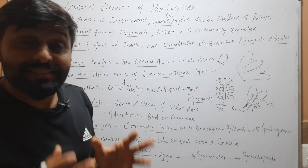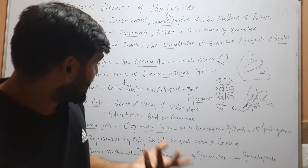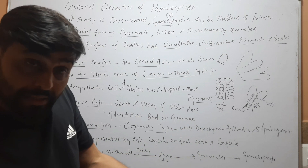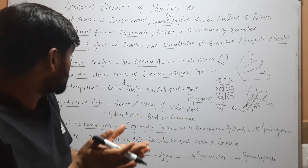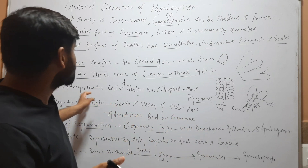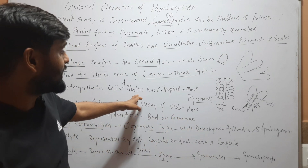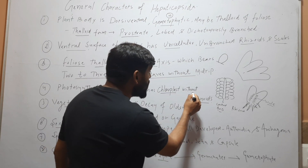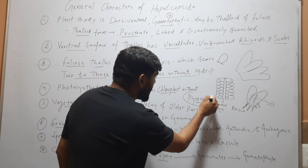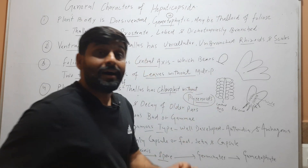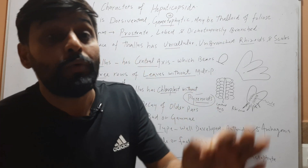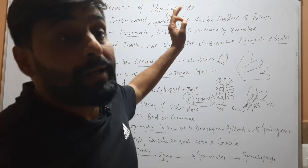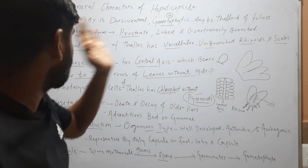The photosynthetic cells of the gametophyte, or thallus — which are the same thing since the main plant body is the gametophyte — have chloroplasts that are without pyrenoids. Pyrenoids, which are found in algae, are absent in the case of Hepaticopsida.